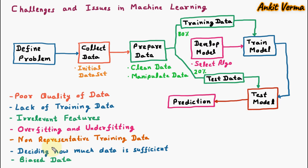The next challenge is biased data. Many times we collect data that is biased. For example, suppose we have 100 people — 50 are saying something and we collected that, but what the remaining 50 are saying we have not collected. So that data becomes biased and will not give proper results. This is a challenge in machine learning.